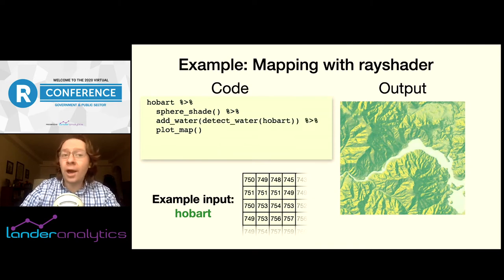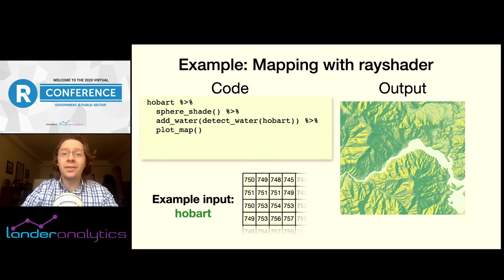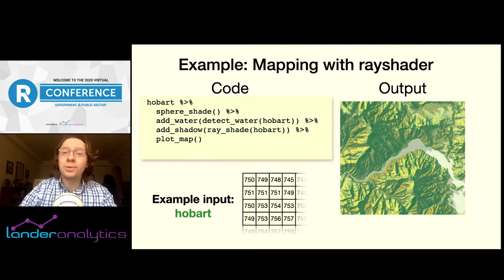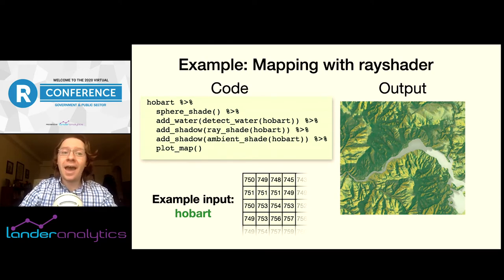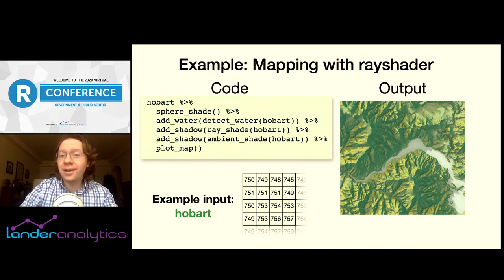I can add a water layer with the RayShader function detect_water, which detects large contiguous flat areas on the elevation matrix and colors them in. I can add some realistic shadows with the rayshade function. I can add another layer of shadows to darken the valleys with the ambient_shade function, which all in all generates a very nicely rendered 2D map entirely from an R matrix and just a couple lines of code.